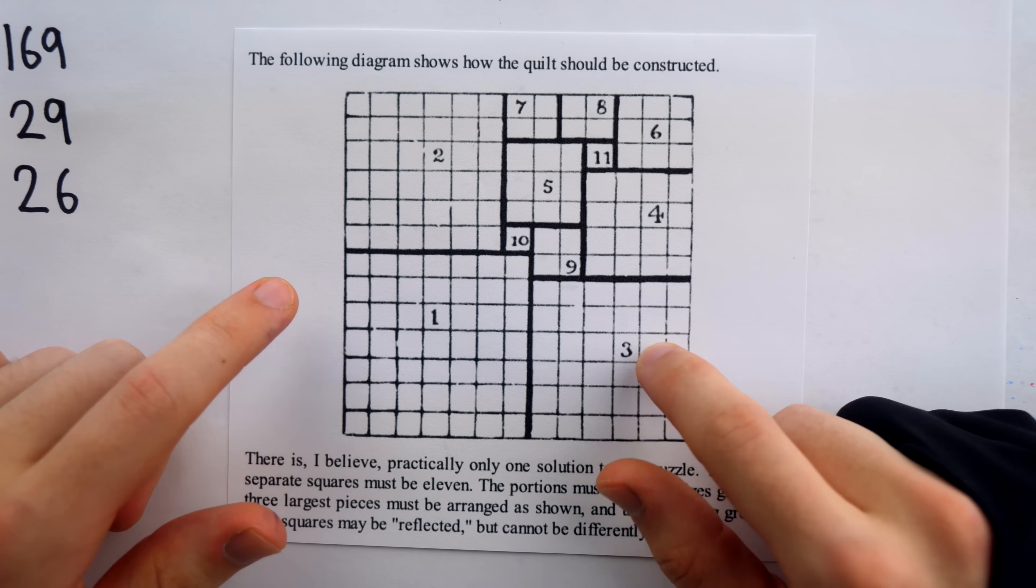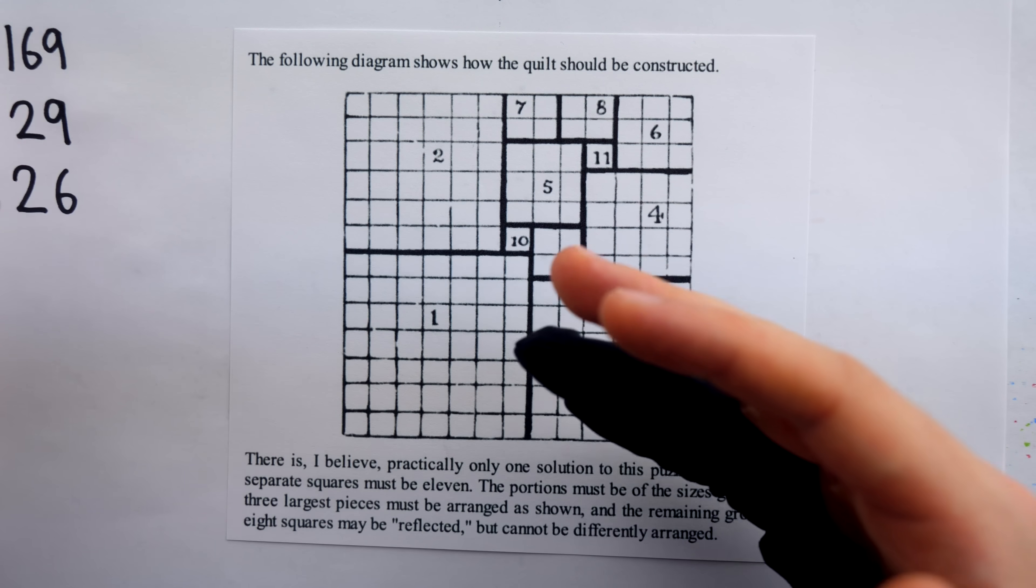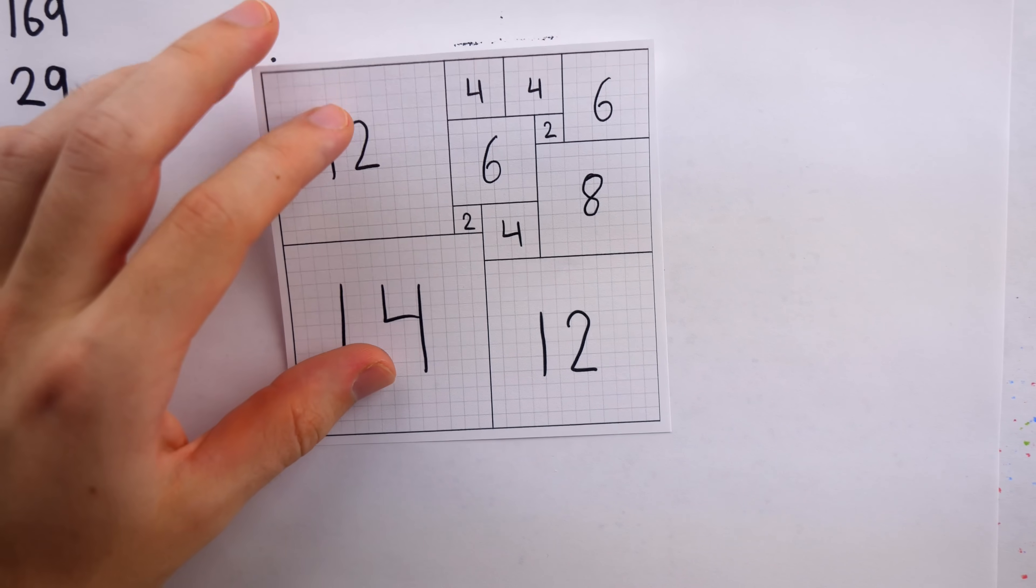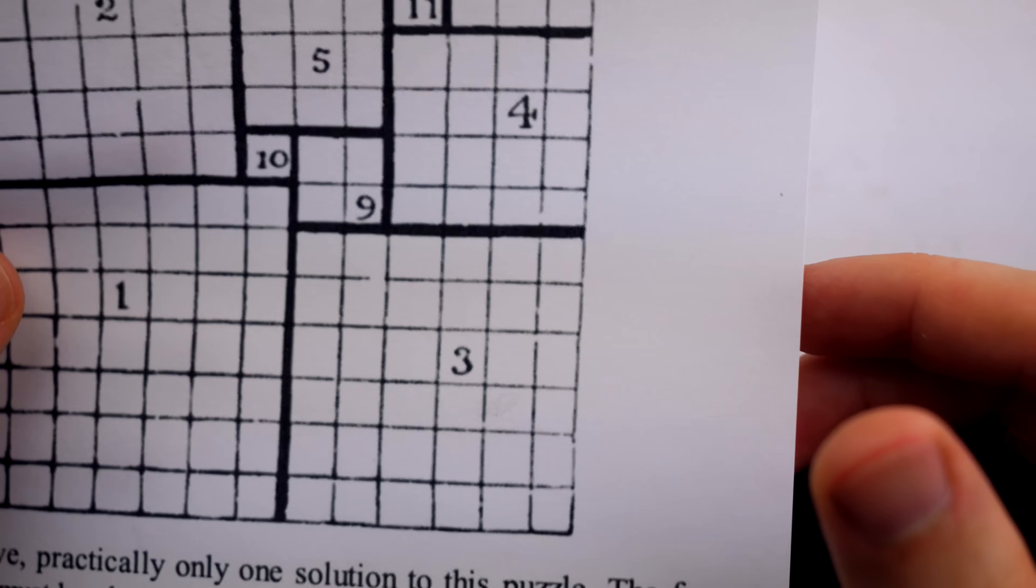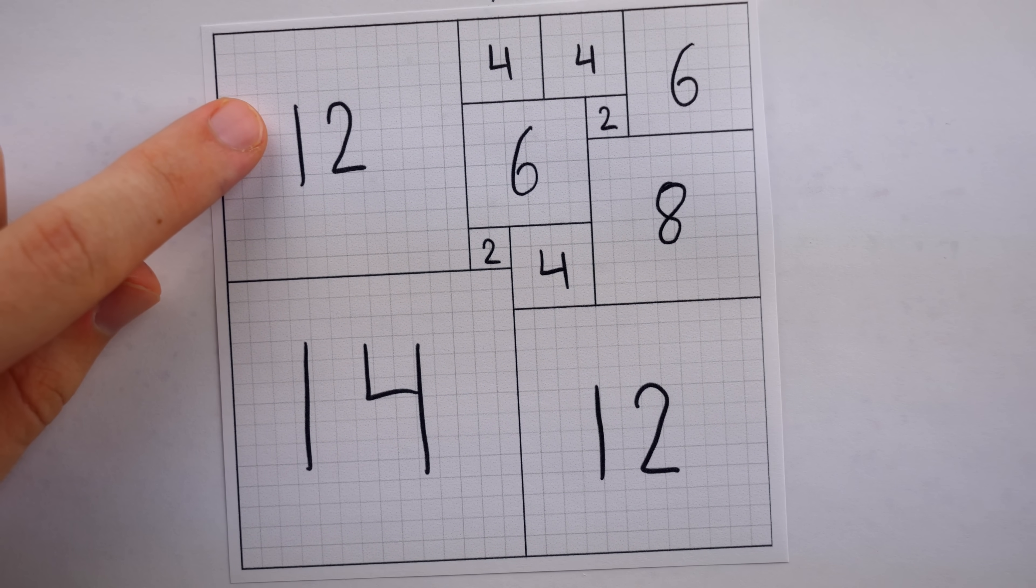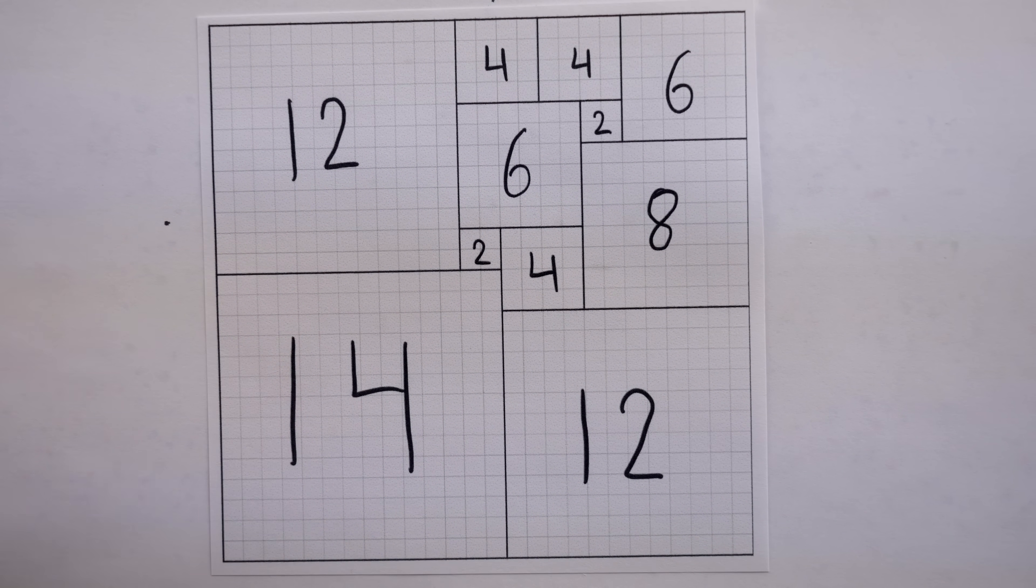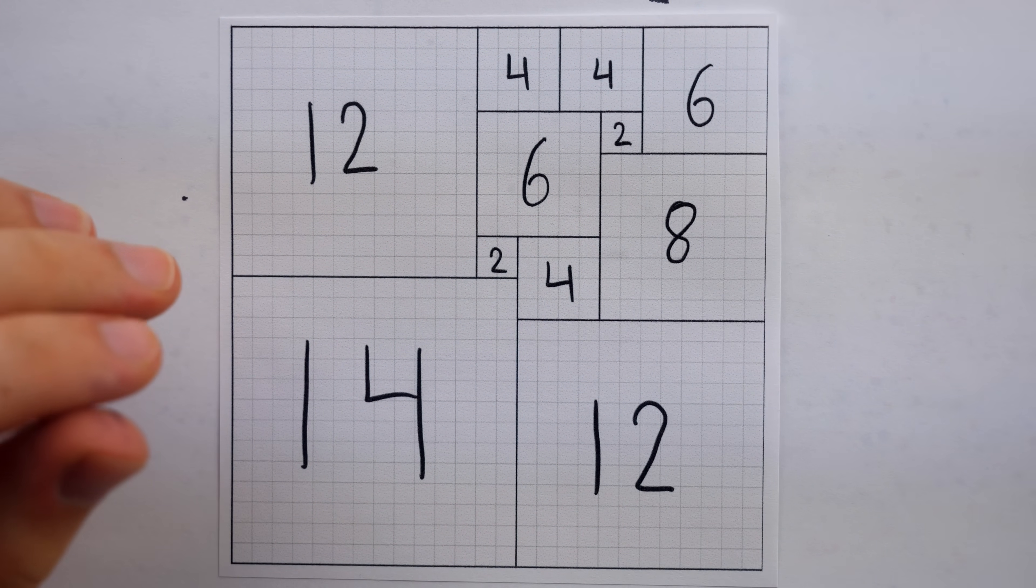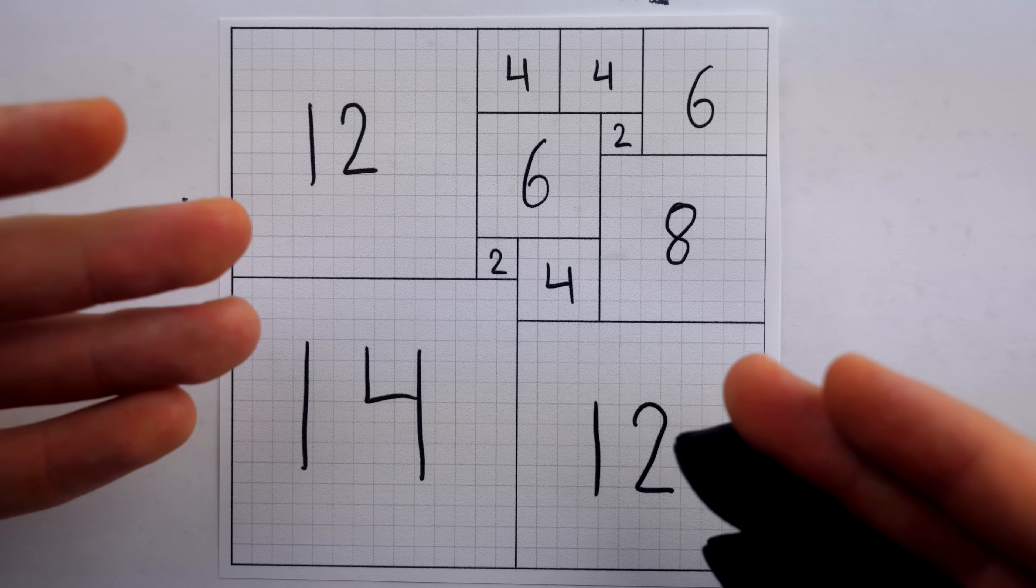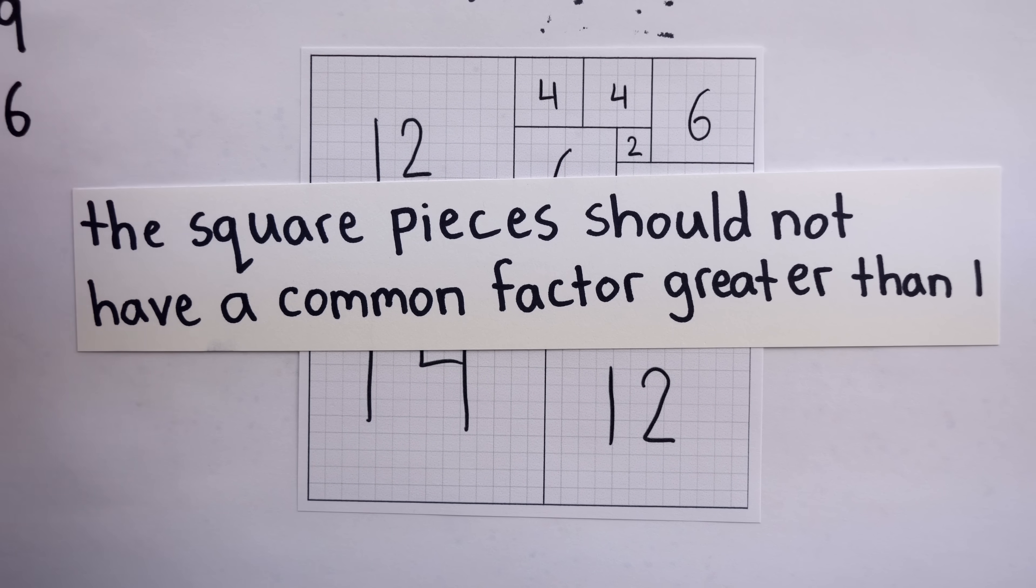This particular issue settled, you may be wondering about the general problem. What is the smallest number of square pieces that an nxn quilt can be cut into? If we look at a 26x26 quilt, for example, we can actually just scale up our solution to the 13x13 case. So here, where we had a 6x6 square, now we have a 12x12 square. Here, where we had a 7x7 square, now we have a 14x14 square. Of course, it's not very interesting if I can just scale up solutions to smaller squares to get a solution to a bigger square. So in the general problem, there is an additional restriction, which is that the square pieces should not have a common factor greater than 1.